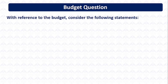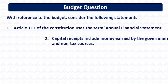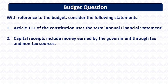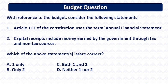The question is: with reference to the budget, consider the following statements. Statement 1: Article 112 of the Constitution uses the term 'Annual Financial Statement.' Statement 2: Capital receipts include money earned by the government through tax and non-tax sources. Which of the above statements is/are correct? Only 1, Only 2, Both 1 and 2, or Neither 1 nor 2? Please provide your answer in the comment section below. I hope you have learned many things from this topic. Thank you.